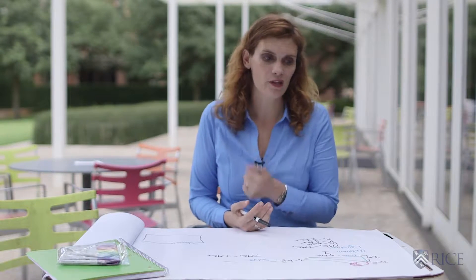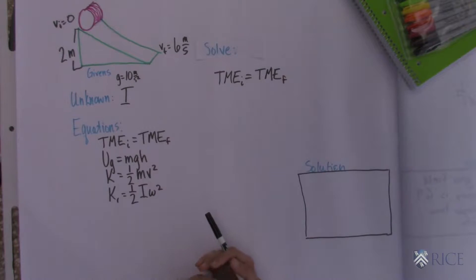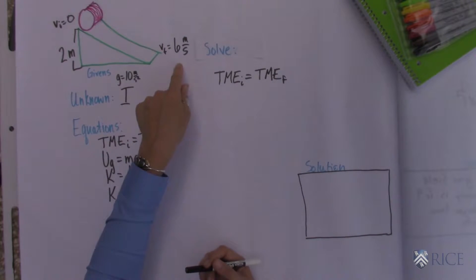Okay, so we have an interesting problem here. You don't even need your calculator for this one. We have a question that says, what is the moment of inertia of an object that rolls without slipping down a 2 meter high ramp, starts from rest, has a final velocity of 6 meters per second?